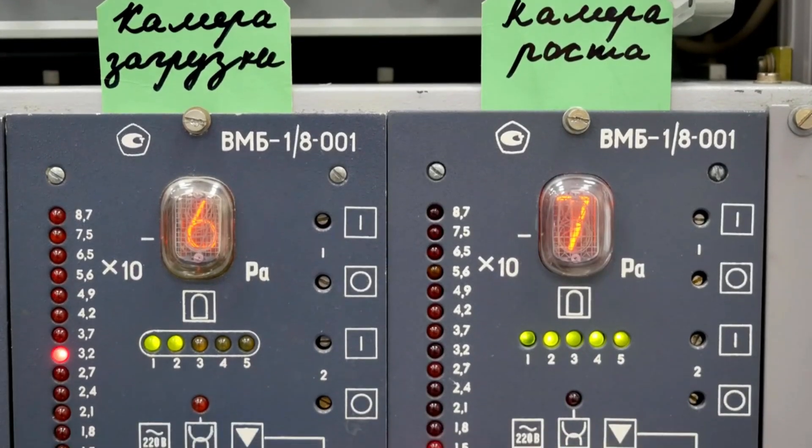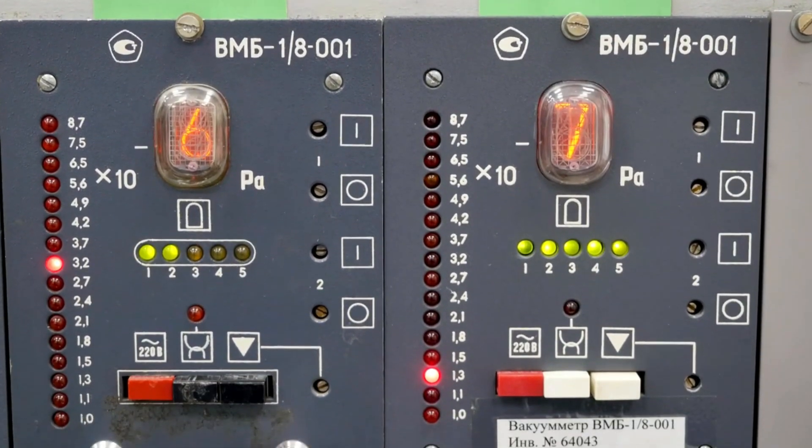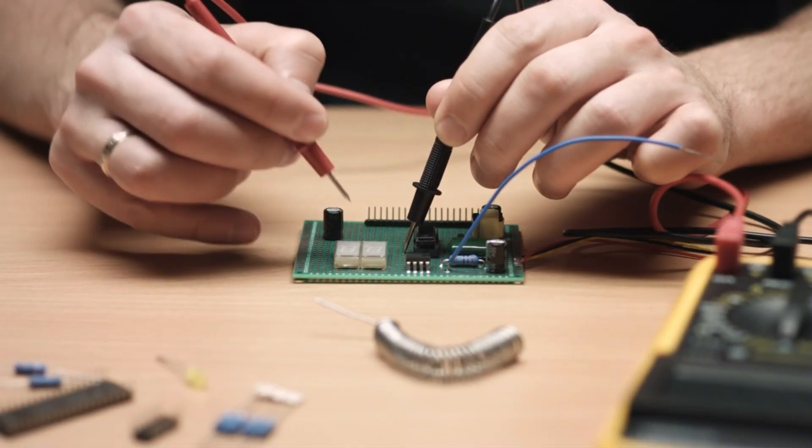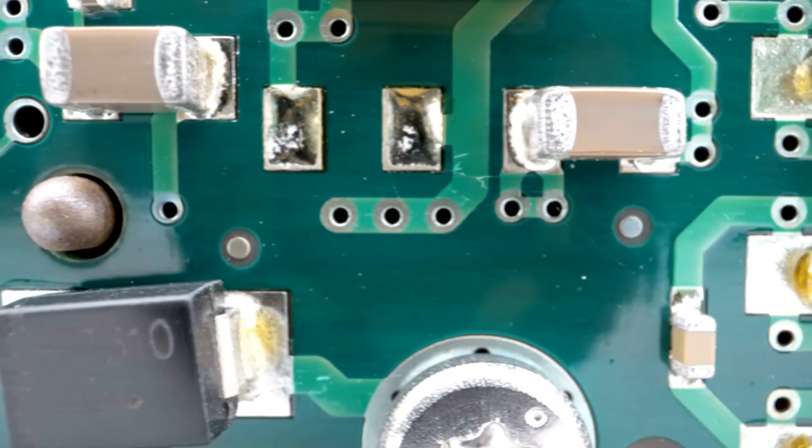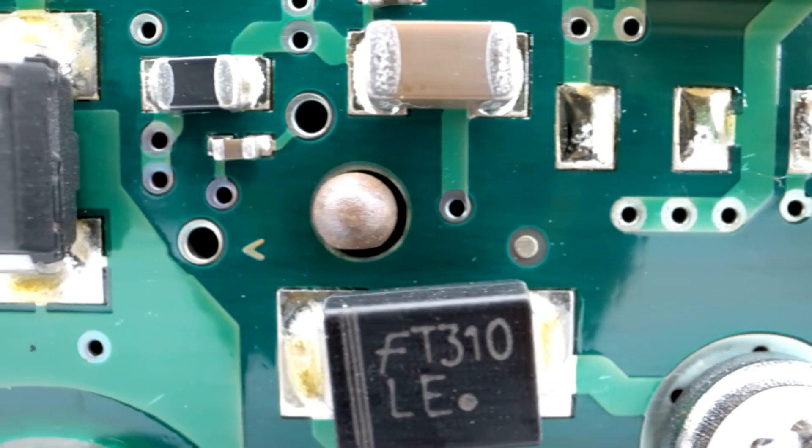The current rating of a fuse is the maximum current it can carry without blowing. It is essential to choose a fuse with a current rating slightly higher than the normal operating current of the circuit to avoid nuisance blowing.